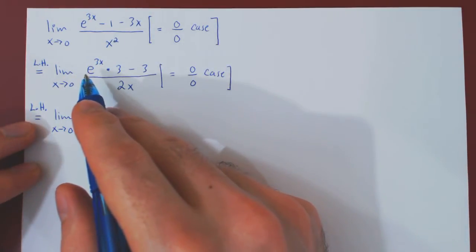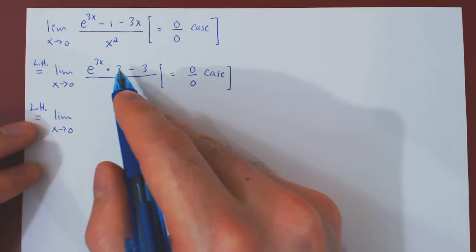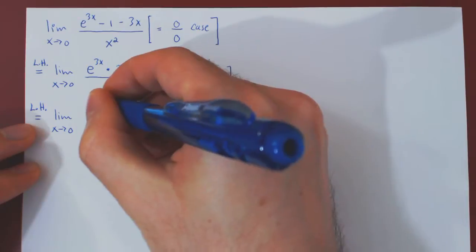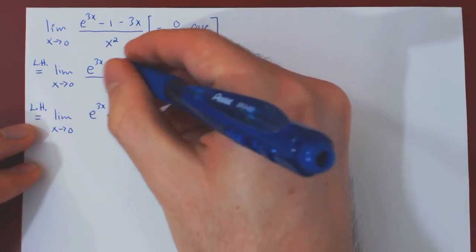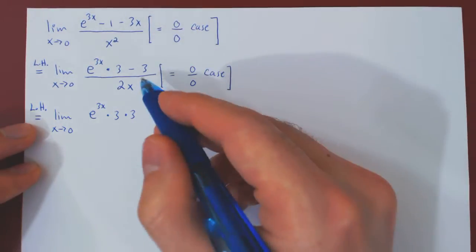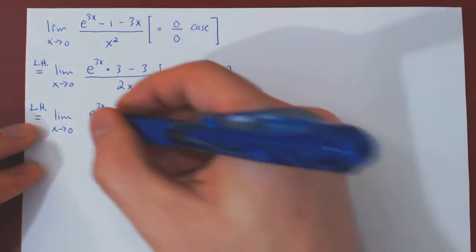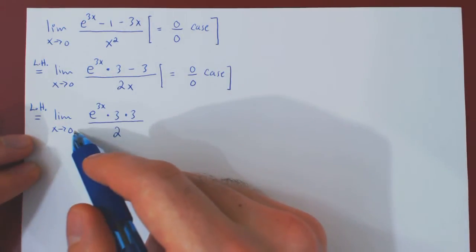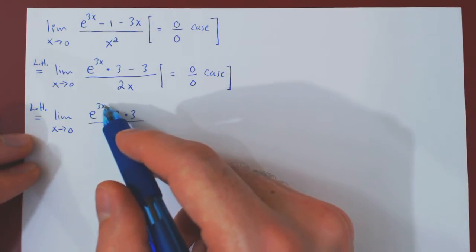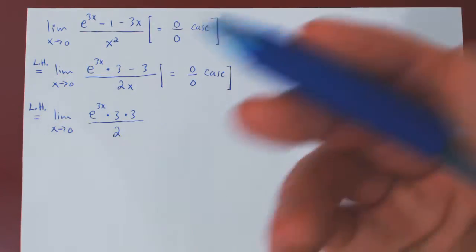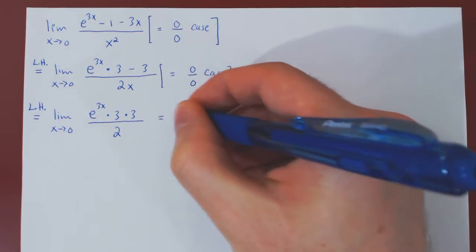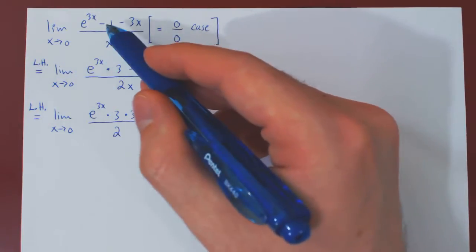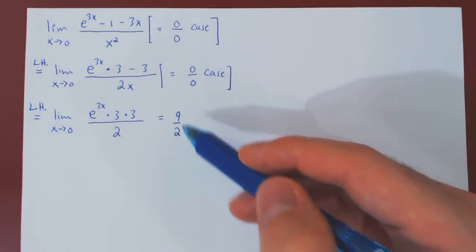Differentiating the numerator: the constant multiple 3 stays, and by the chain rule the derivative of e to the 3x is e to the 3x times 3, minus the derivative of 3 which is 0, over the derivative of 2x which is 2. Now we have a trivial limit: as x goes to 0, 3x goes to 0, e to the 0 is 1, times 3 times 3 is 9 over 2. So the answer is 9/2 — as x approaches 0, this function approaches 9/2.